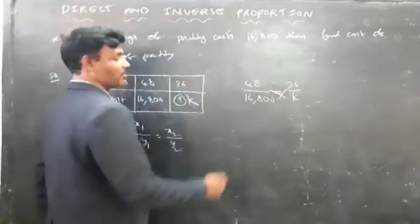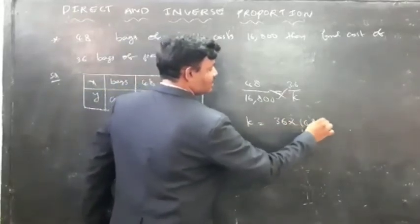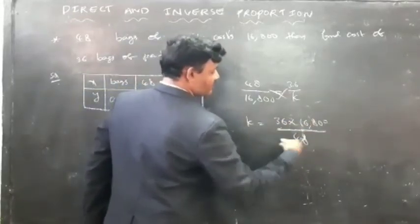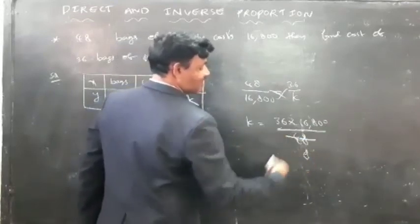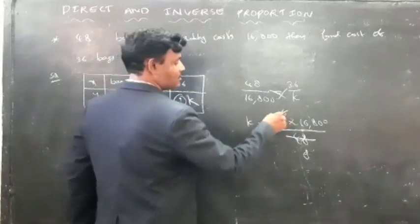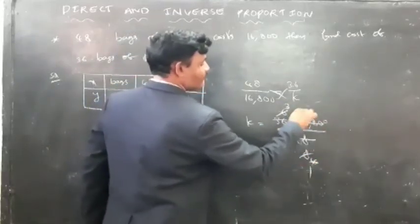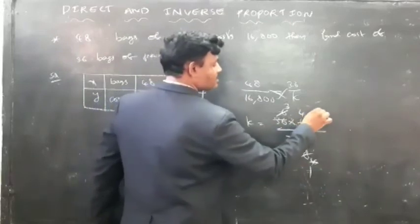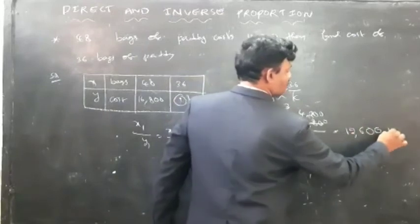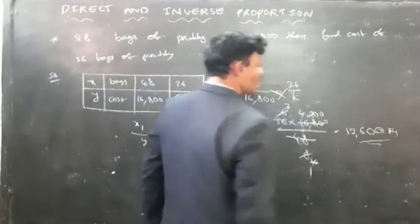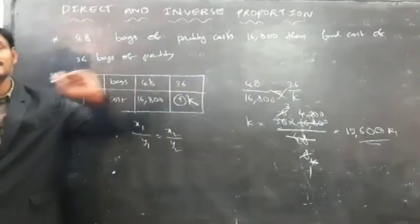Doing cross multiplication: k is equal to 36 into 16,800 divided by 48. After cancellation, k equals 12,600 rupees. So the cost of 36 bags is 12,600 rupees.